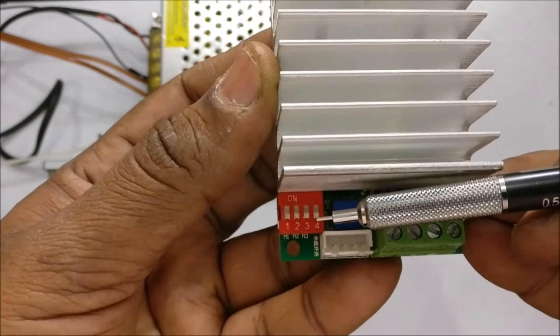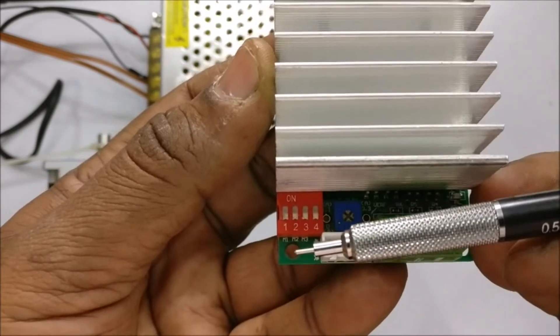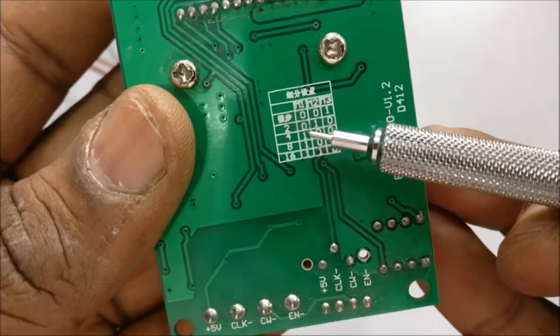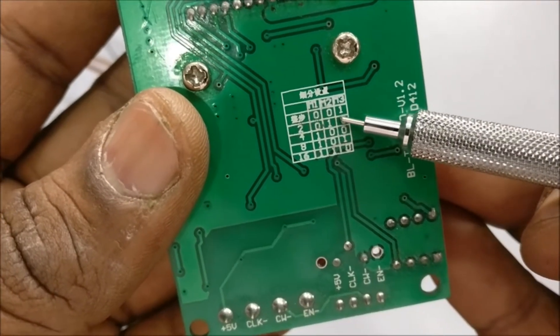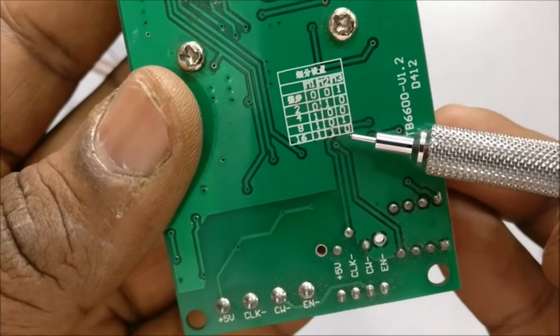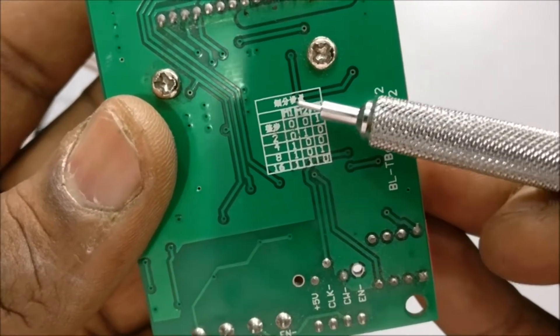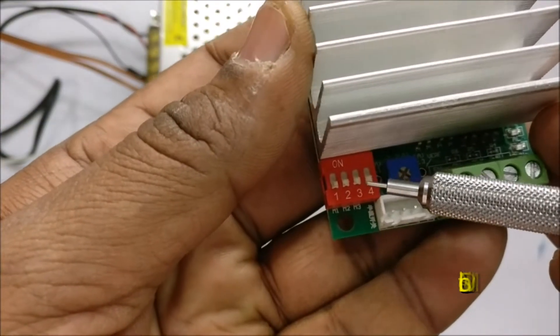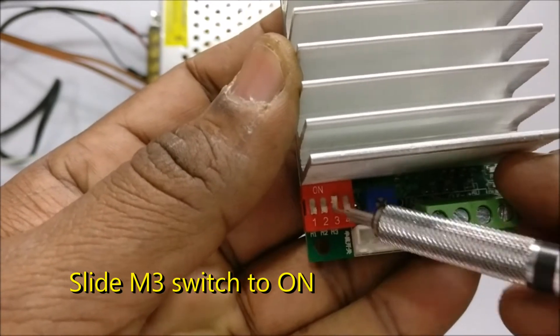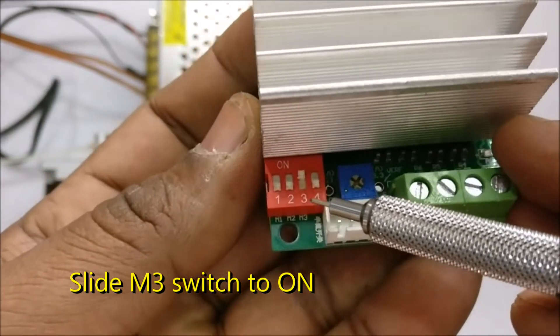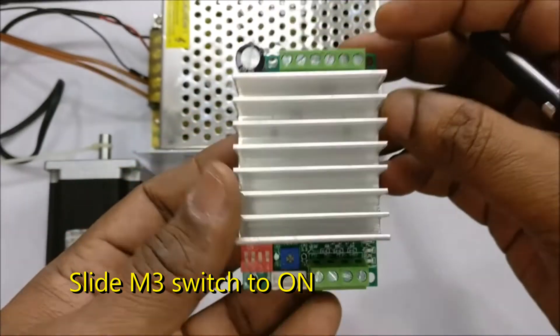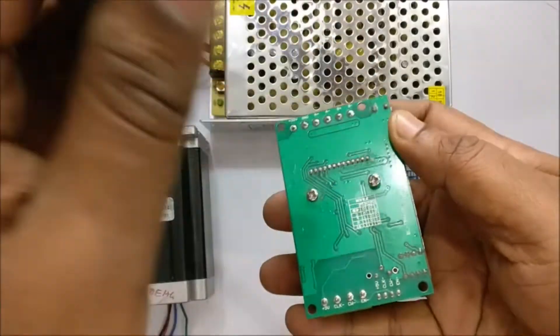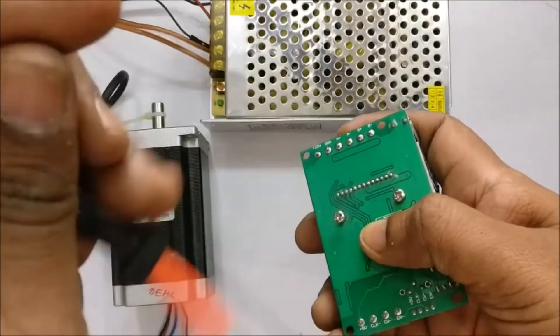At the bottom one dip switch is there, 4 switches, M1, M2, M3, M4, out of which M1, M2 and M3 controls the step. That is full step, 1 by 2, 1 by 4 or 1 by 8. For general operation, put the M3 switch to ON position. M1, M2 in OFF and M3 to ON position. If all switches are ON or all switches are OFF, this board will not work. So take care to set this switch initially.